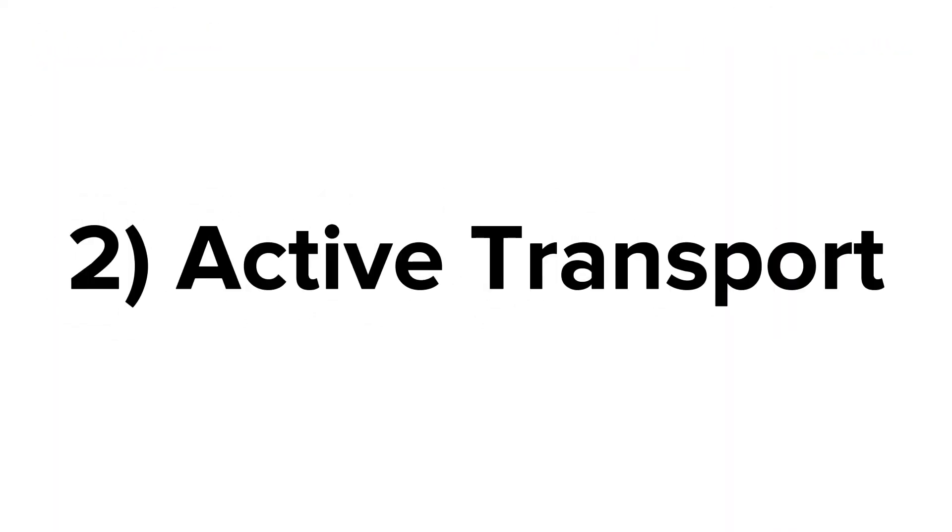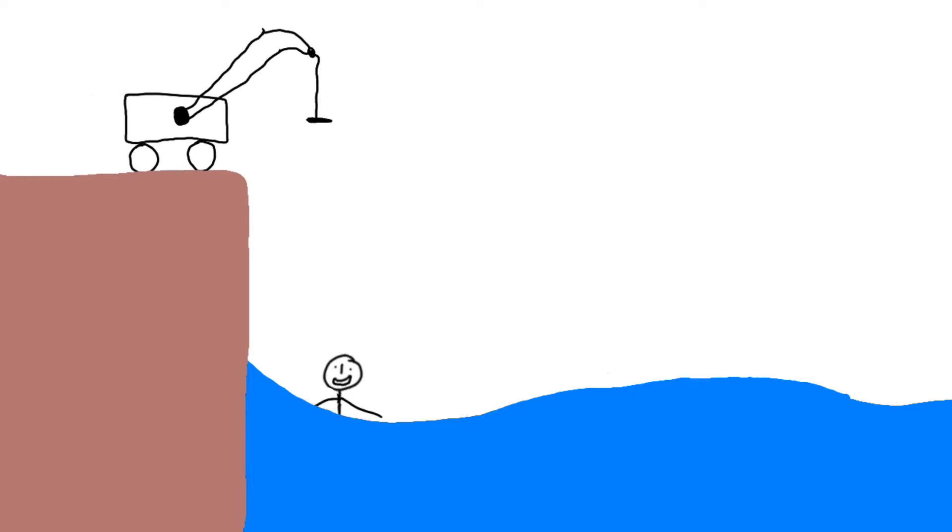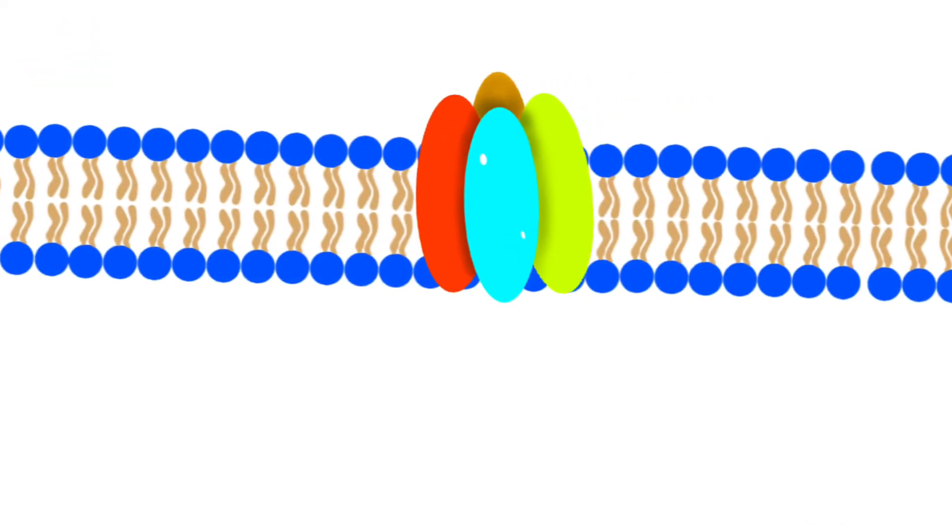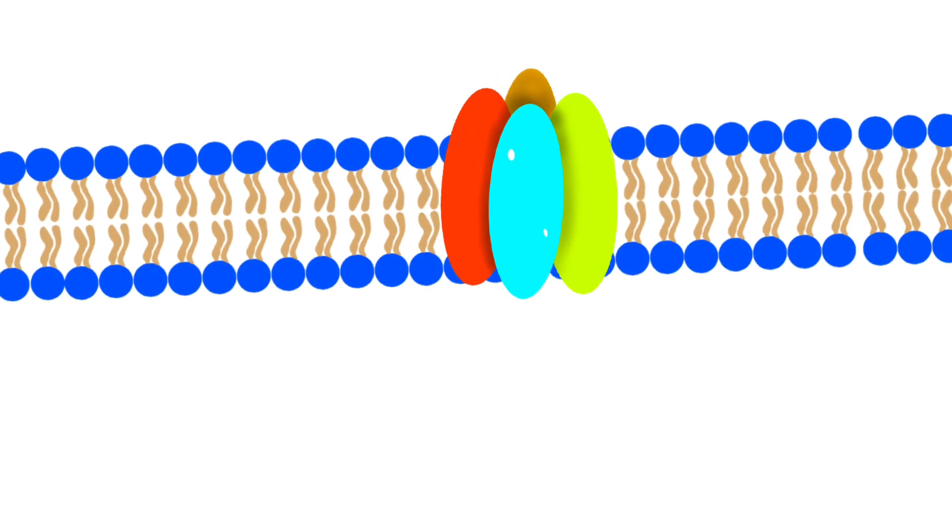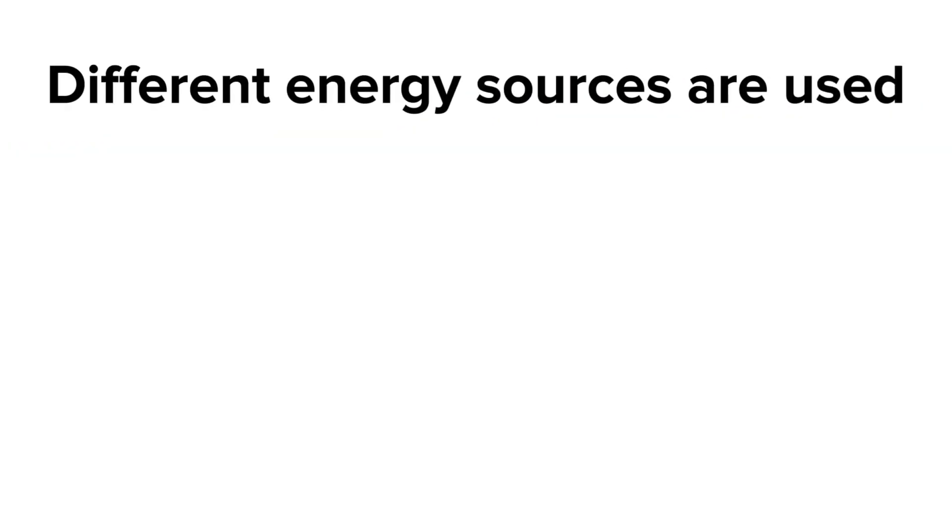The second type of transport is by active transport. When you jump into the pool, you don't need energy to go down, only gravity is needed. But if you want to go up, you need energy to go up again to the jumping point. Now let's downscale this example into molecules. Cells use different energy sources to allow this active transport through their membranes.